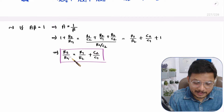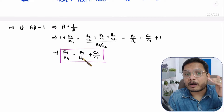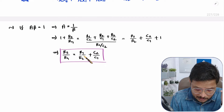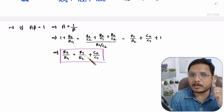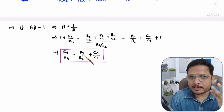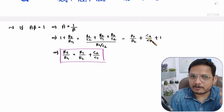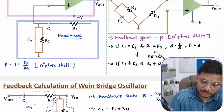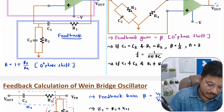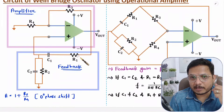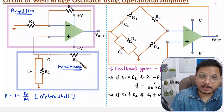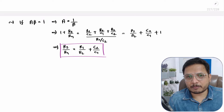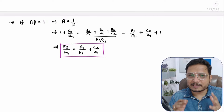Once this condition is satisfied, you can determine how to place the components. If circuit values are given, check whether the condition R3 by R4 equals R1 by R2 plus C2 by C1 is met. If values are not given, assume R1 equals R2 and C1 equals C2, then identify unknown quantities from the equations and place them in the circuit. That is how one can design a Wien Bridge oscillator.